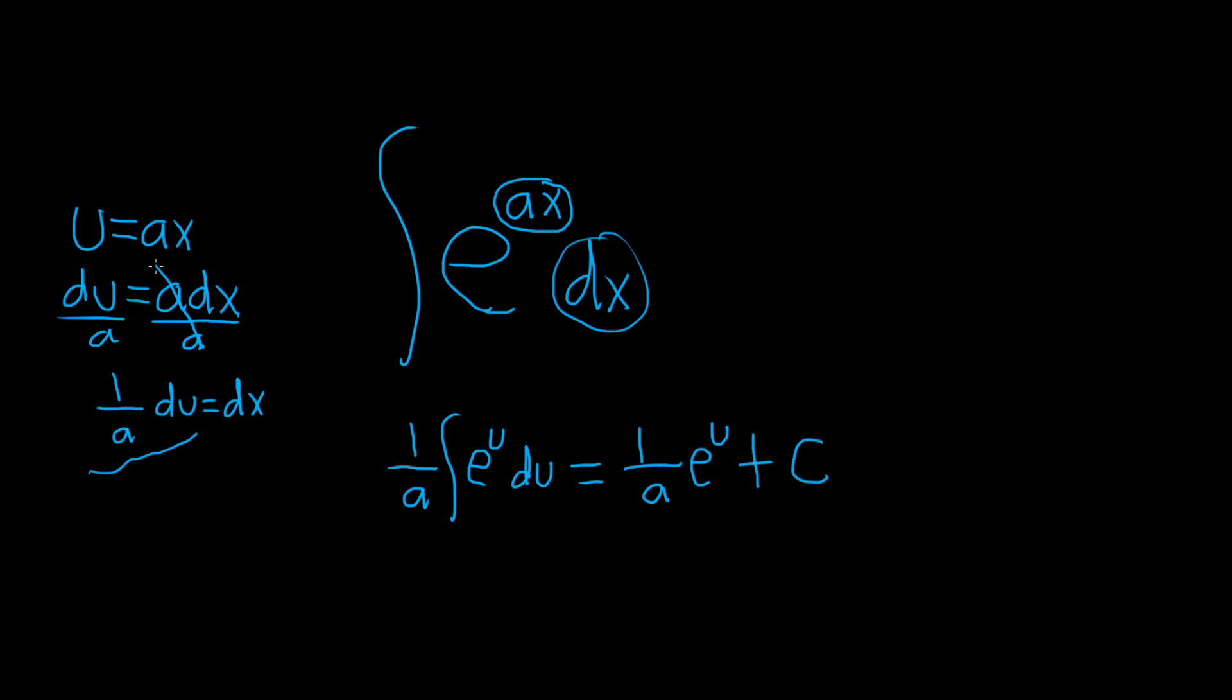The very last step is to replace u with what it actually is. So this is 1 over a, and then u was ax, so it's e to the ax, and then plus capital C. And that would be the final answer.